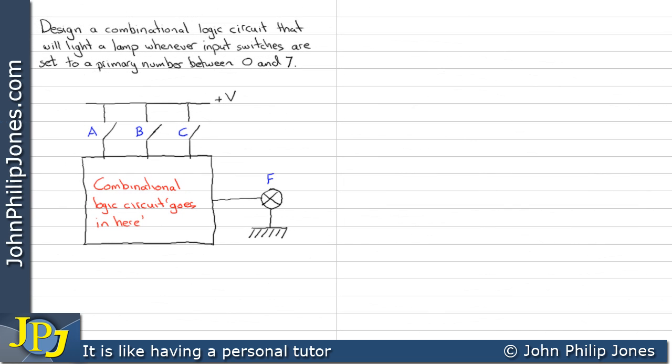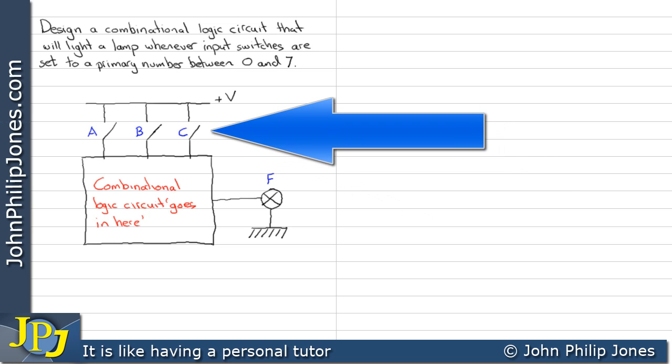The schematic diagram for such a circuit is shown here. Here we can see we have three switches A, B and C. Now these switches are the number we require in order to give us all of the combinations of input numbers between 0 and 7. And we are going to actually put the combinational circuit in here.